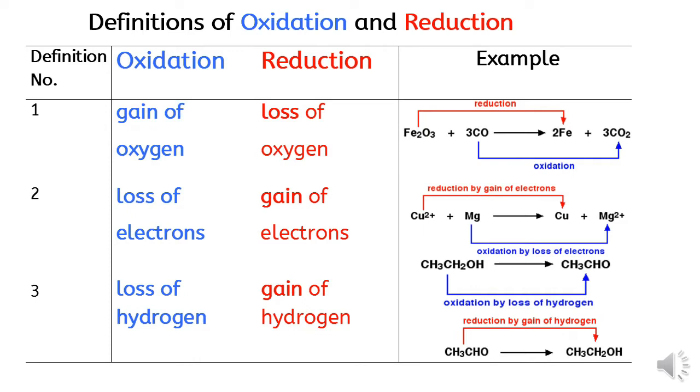reduction in terms of electron transfer. Oxidation is loss of electrons, while reduction is gain of electrons. For example, magnesium